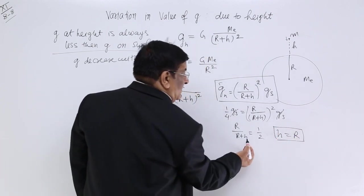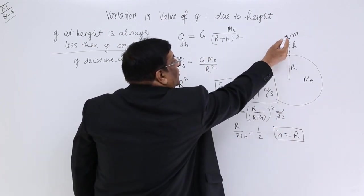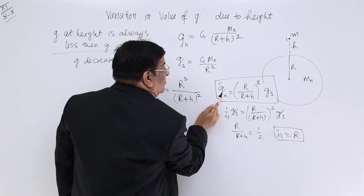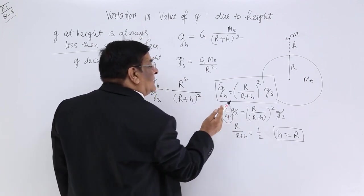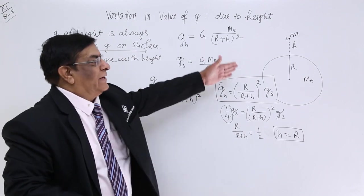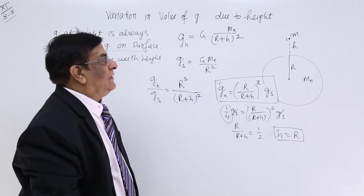So at a height which is equal to 6400 kilometers, the value of acceleration will become one-fourth. This is how we solve the numericals with help of this. Okay.